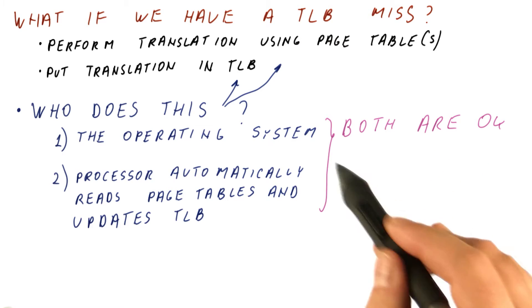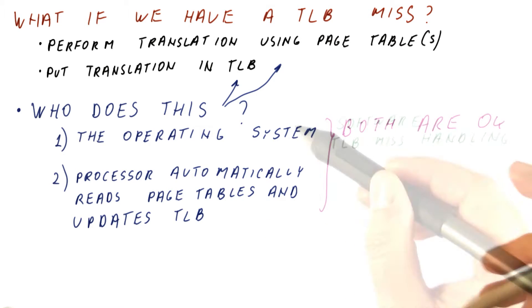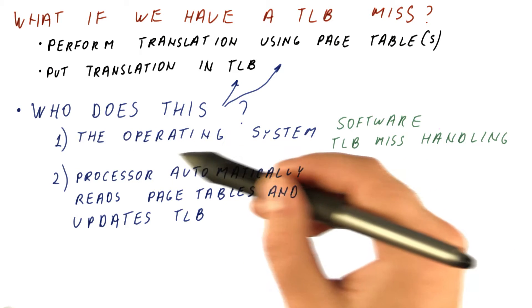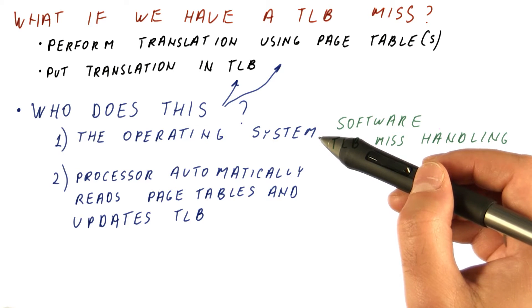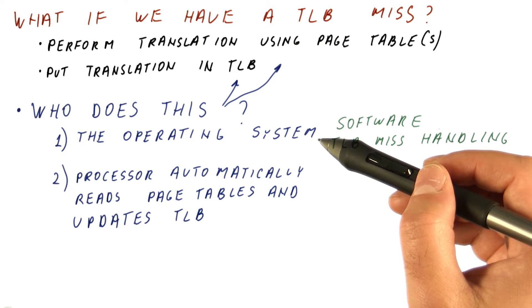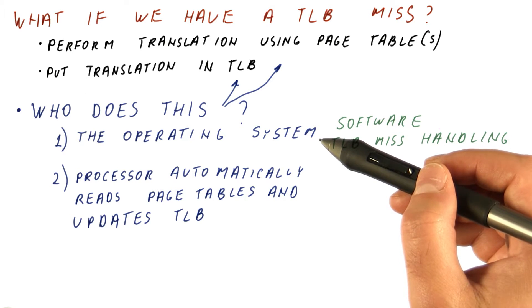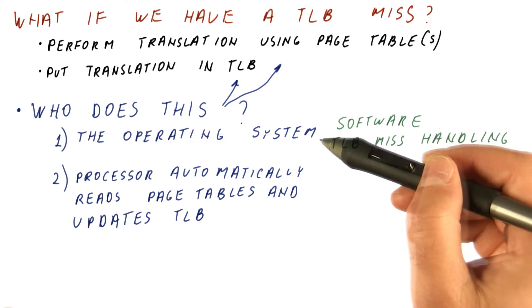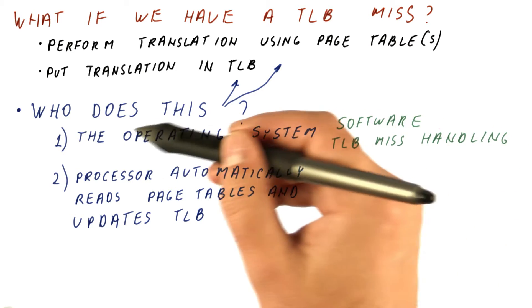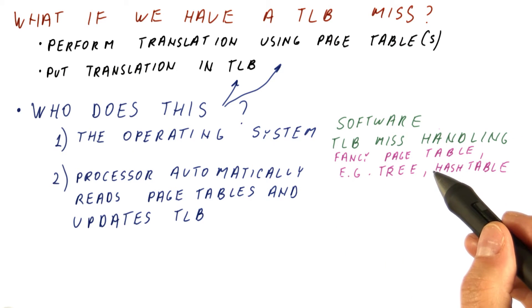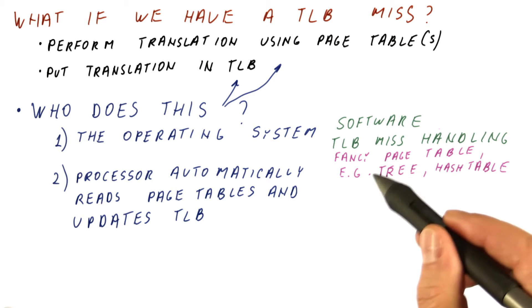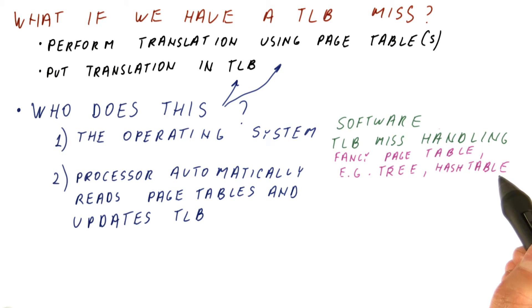To answer a question, both are okay options. This option is called software TLB mishandling. It has the advantage of letting the operating system use any sort of page table that it wants, because the hardware doesn't really need to access the page table. The hardware simply has a TLB, and the job of the operating system is to put the correct translations into the TLB. You can use any organization for the page table. For example, the OS may not even have the page table in the form of a table — it can use a binary tree, or a hash table, or anything else it wants.